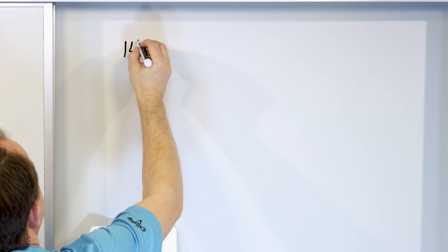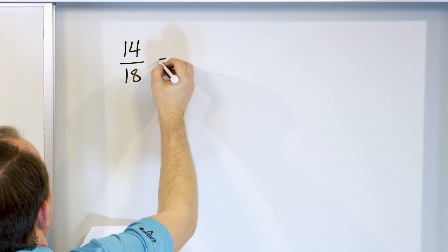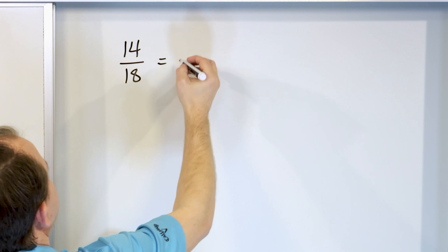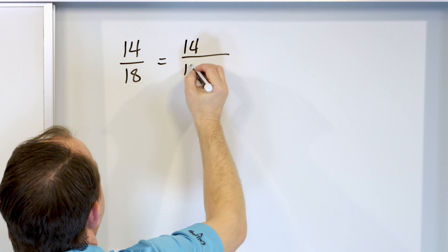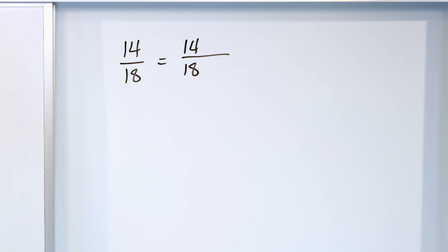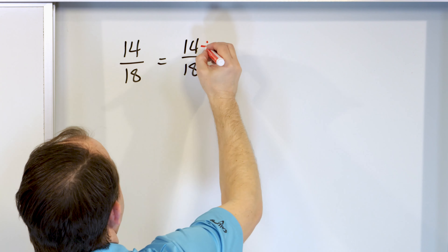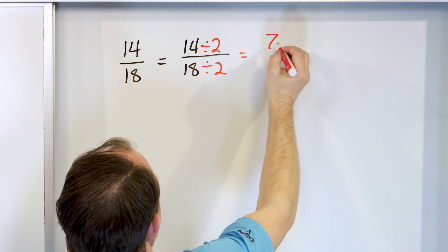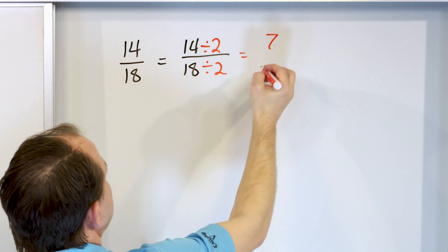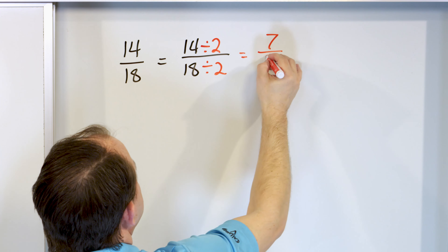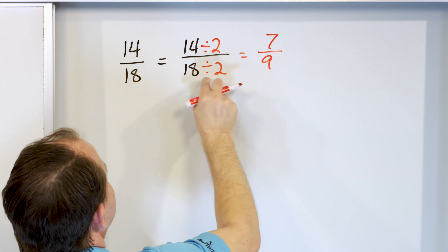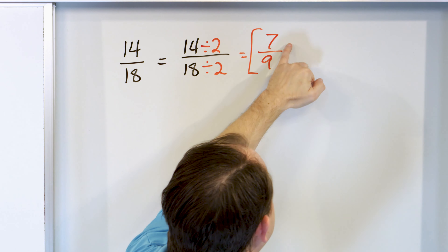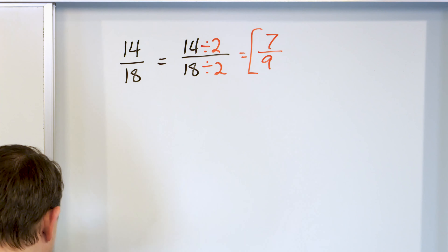Let's take a look at fourteen-eighteenths. What can I divide top and bottom by? I can see these are even numbers, so I'll divide the top and bottom by two. Fourteen divided by two is seven, because seven times two is fourteen. Eighteen divided by two is nine, because nine times two is eighteen. The answer is seven-ninths. I cannot divide top and bottom by anything further, so I am done.